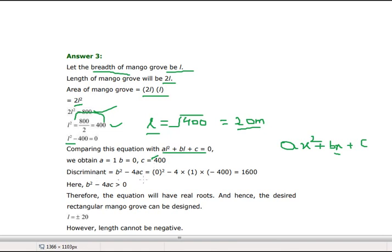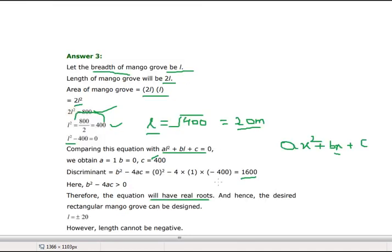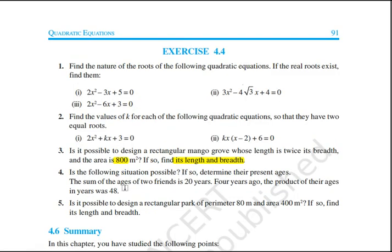Finding the discriminant, we are getting it as 1600. It is greater than 0. Therefore, it will have real roots, two distinct real roots. l will be ±20. Since length cannot be negative, it will be 20 m, and breadth will be 2 × 20 = 40 m. So form the equations, compare to the quadratic equation, then solve.